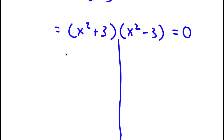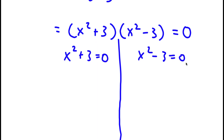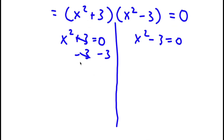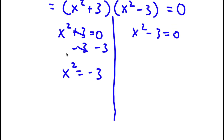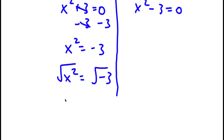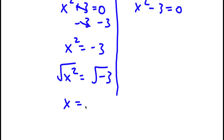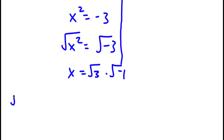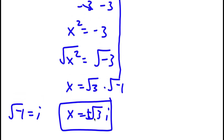Now I can split this into two equations: x to the power of 2 plus 3 equals 0, and x to the power of 2 minus 3 equals 0. For x squared plus 3 equals 0, I subtract 3 from both sides, leaving x squared equals negative 3. Taking the square root of both sides, the square root of negative 3 is the square root of 3 times the square root of negative 1. The square root of negative 1 is i, so x equals positive or negative square root of 3i. Those are two solutions.